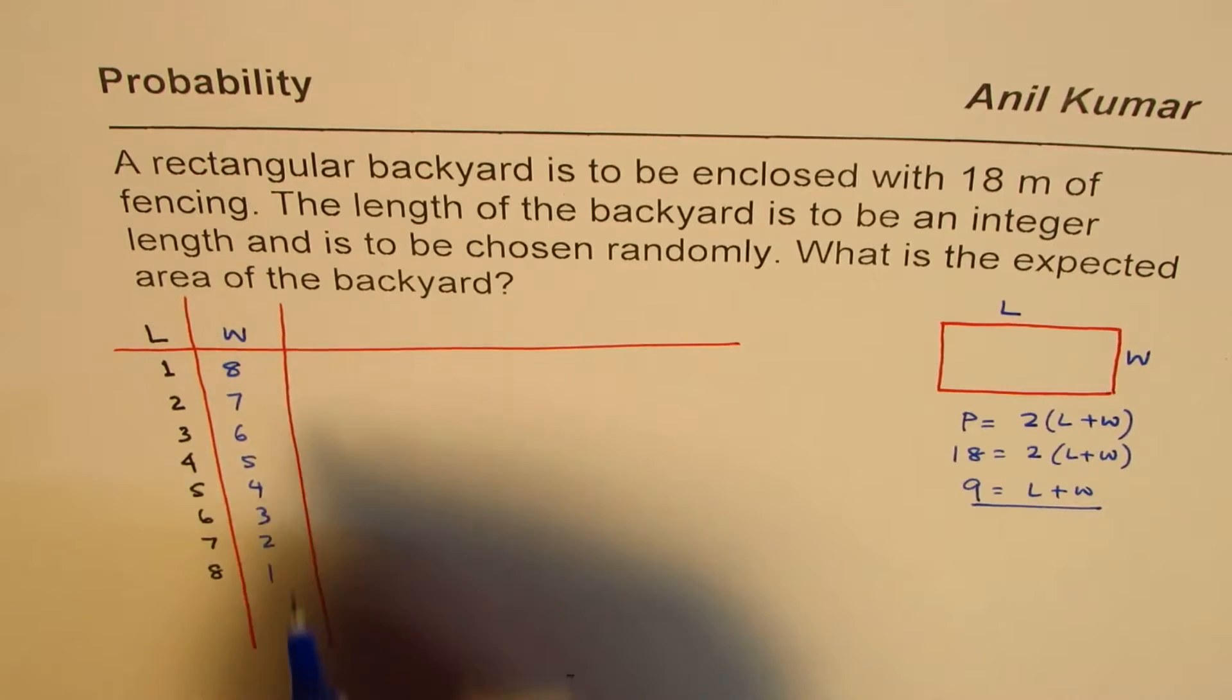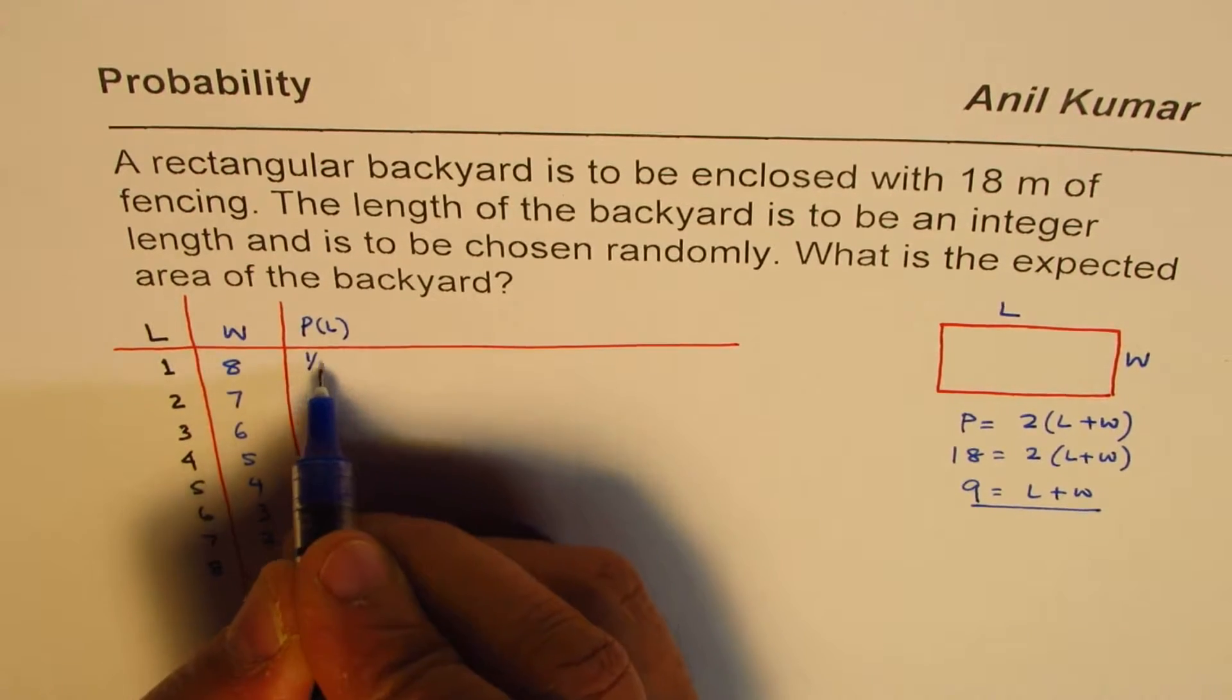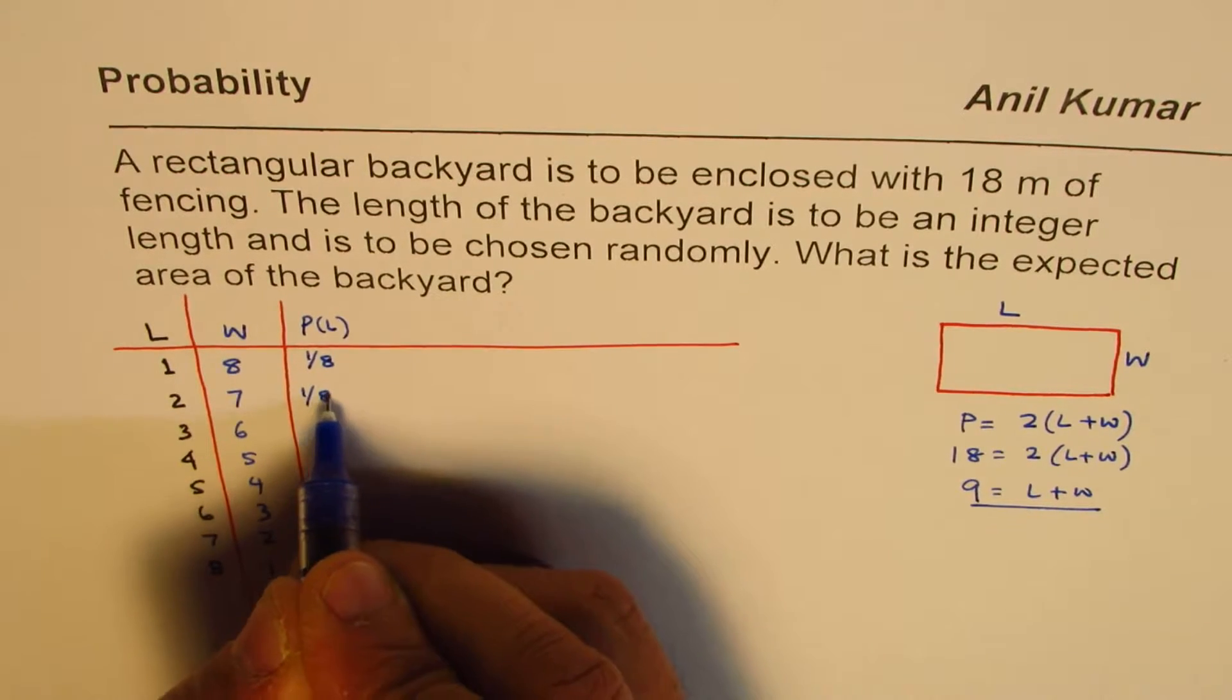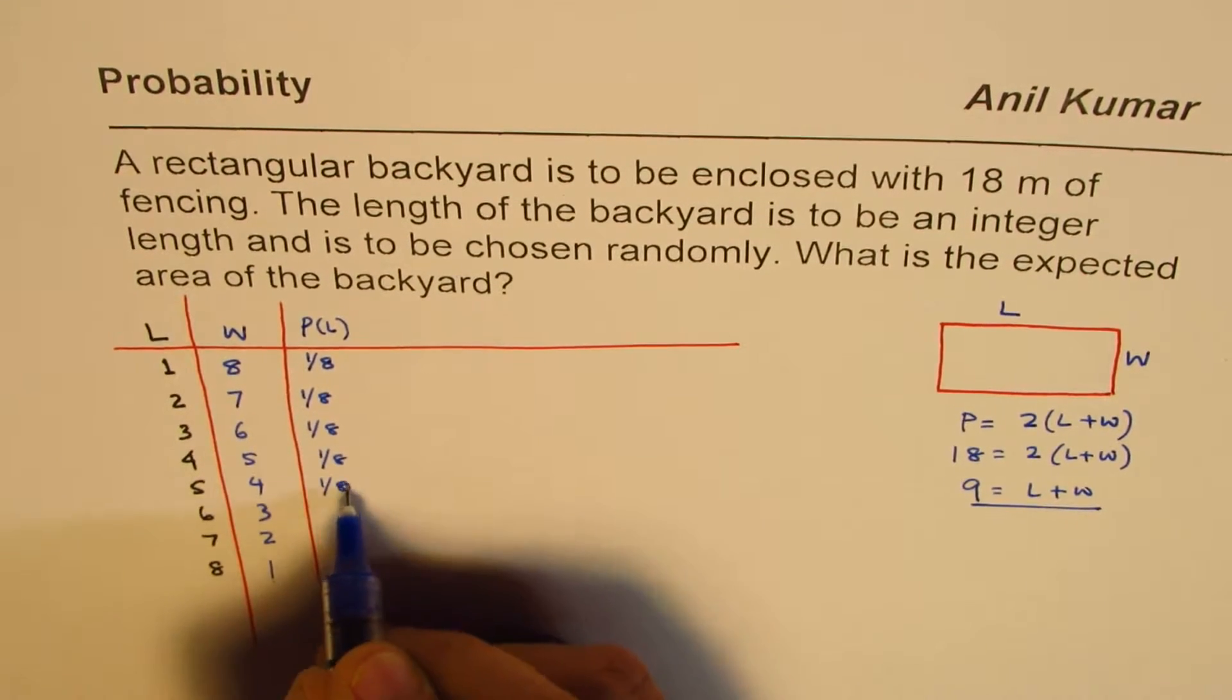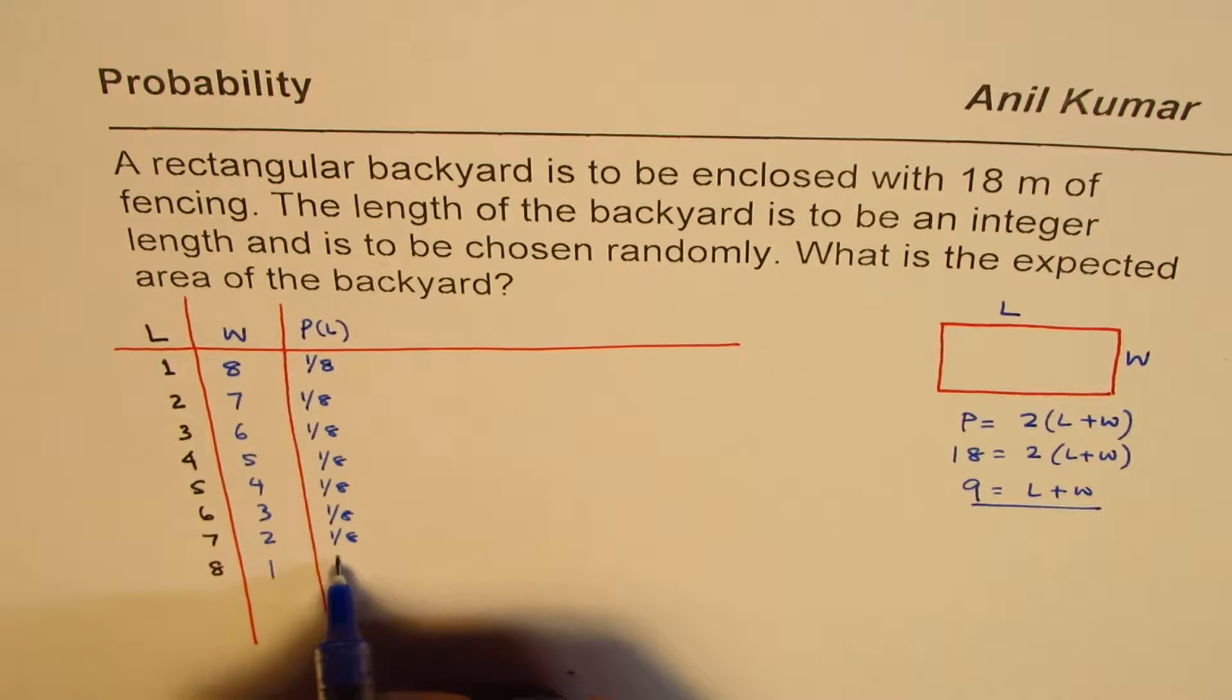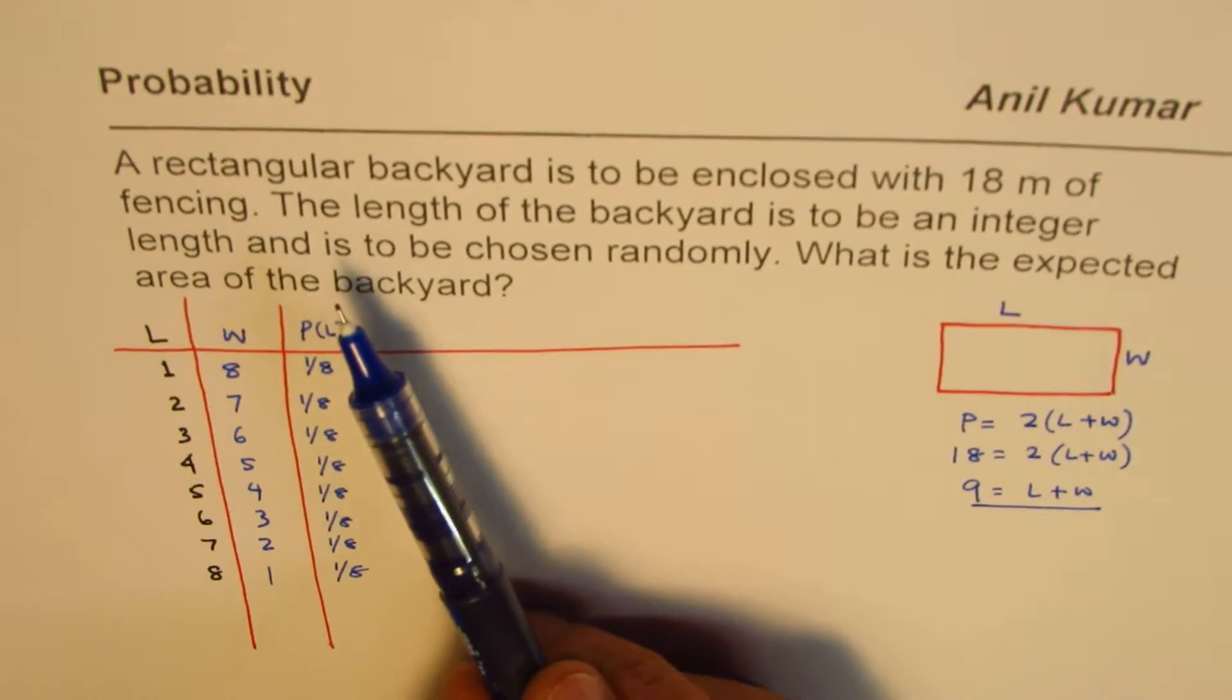So if you want to write, you can say probability for L is actually 1 over 8 for all. So L could take only 8 numbers out of which each one could be just 1. Now let's look into the question once again.